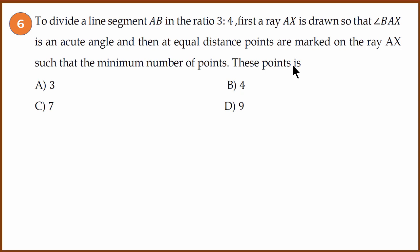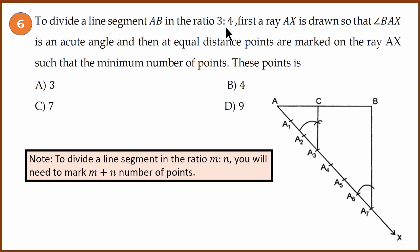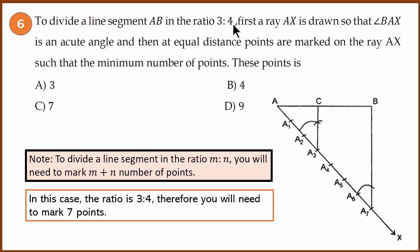How many are the minimum number of points to divide a line in the ratio of 3 is to 4? You have a simple formula: to divide the line segment in the ratio m is to n, you need to mark m plus n number of points. So 3 is to 4 is there, which means you need to note 7 points. Answer is 7.